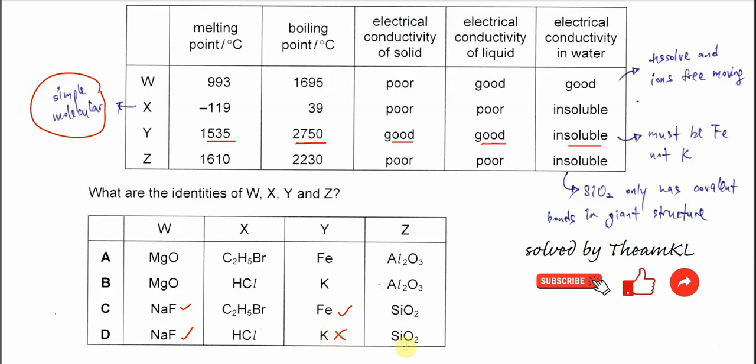And for the Z, I don't think we need to really choose that. Okay, so now we can get the answer C. So for the SiO2, this one is confirmed is Z. Z is SiO2, so it's high melting point, boiling point, poor electrical conductivity of solid, as well as liquid, and of course insoluble in the water. Because it has a giant covalent or giant molecular structure.